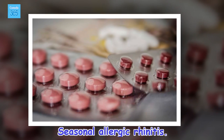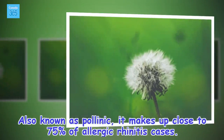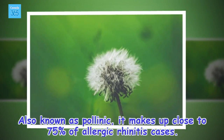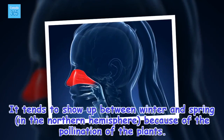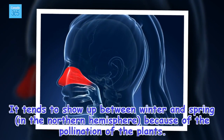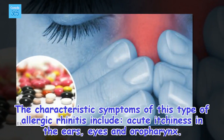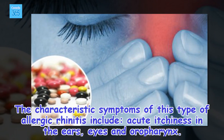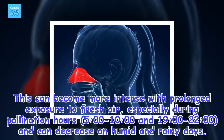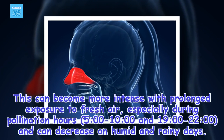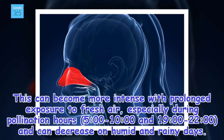Seasonal allergic rhinitis, also known as pollinic, makes up close to 75% of allergic rhinitis cases. It tends to show up between winter and spring in the northern hemisphere because of the pollination of the plants. The characteristic symptoms include acute itchiness in the ears, eyes, and oropharynx. This can become more intense with prolonged exposure to fresh air, especially during pollination hours — 5:00 to 10:00 and 19:00 to 22:00 — and can decrease on humid and rainy days.